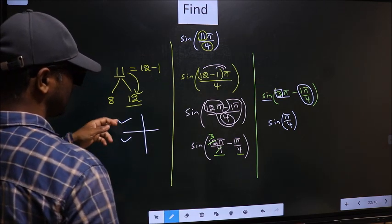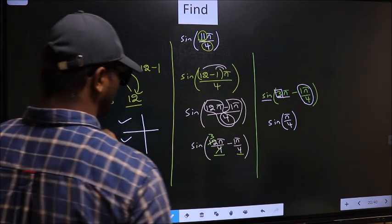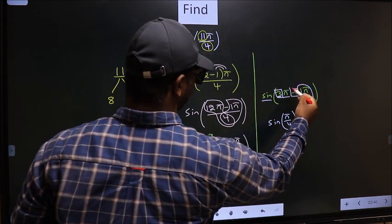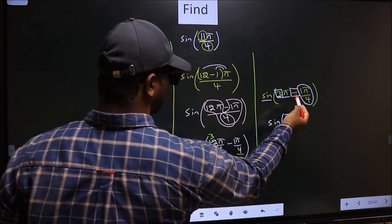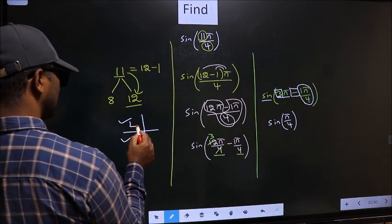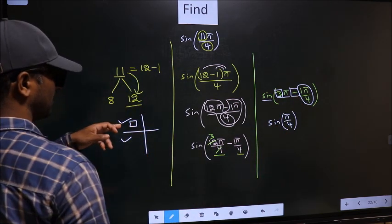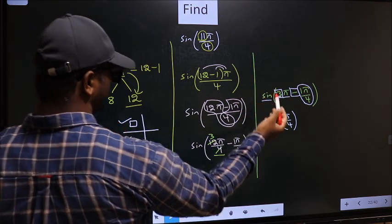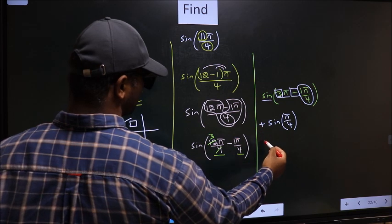So, now to check in which quadrant does the angle lie, we should look at this symbol. Here we have negative. That means the angle lies in the second quadrant. And in the second quadrant, sine is positive. So, put plus.